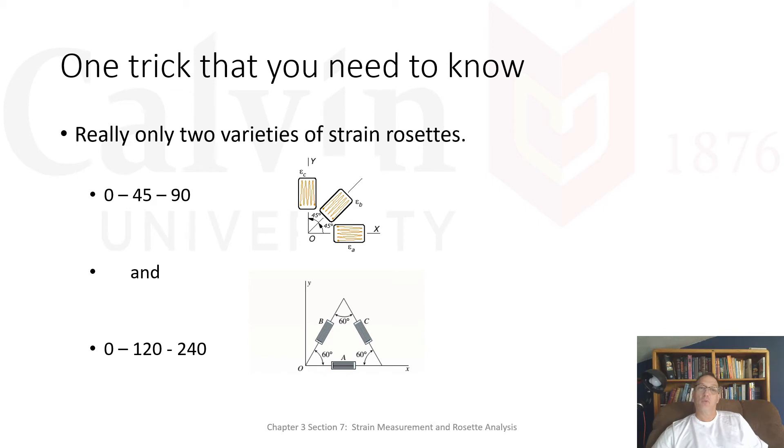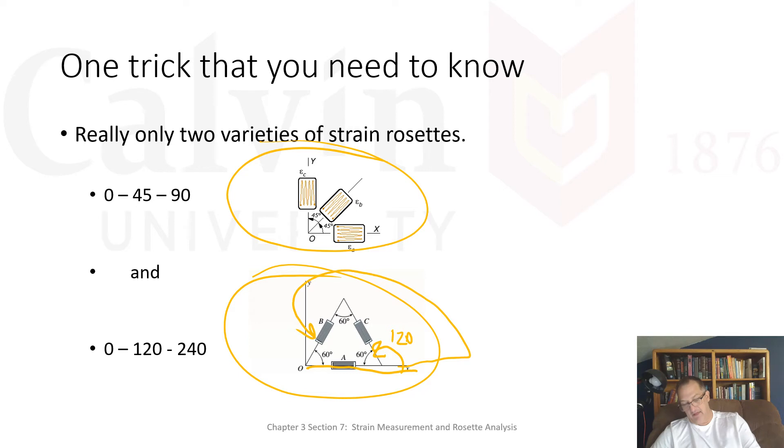Here's what I was talking about. The one trick that you need to know when you do this is that there's really only two varieties of strain rosettes. There could be an infinite number, really. But the way people build them is either in this orientation, the 0, 45, 90, and this triangle, the equilateral triangle, where they're at zero. So this is my zero, and then this is 120, and that is 240. That's the way to think about that. It's a 0, 120, 240. Some people will call it a 0, 60, 120. That's fine, because while this is 240, it's also, one's plus 120, one's minus 120.